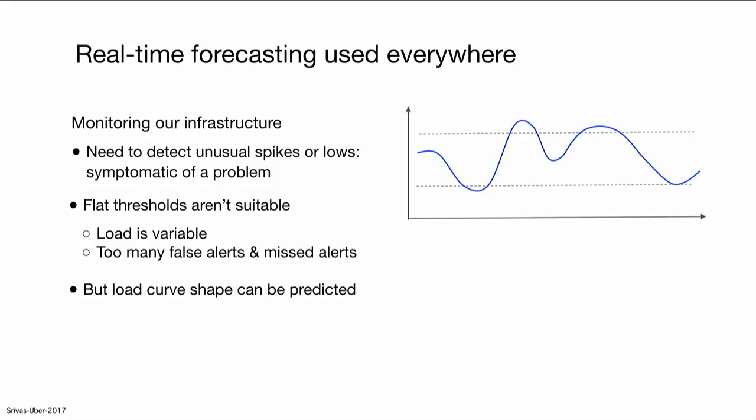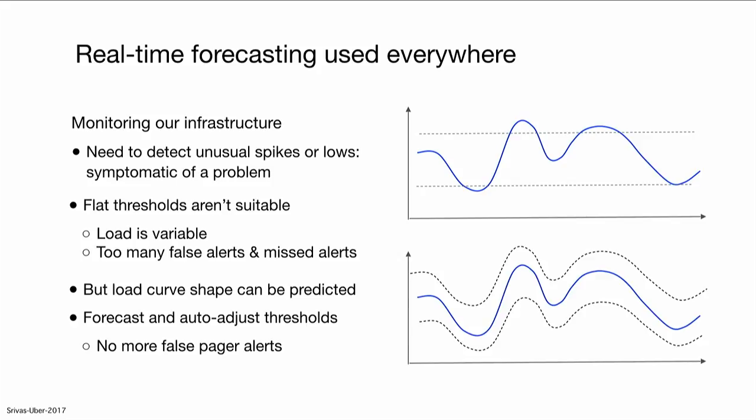And so we try to predict the load, and we can adjust the thresholds automatically. We use machine learning to figure out how to place the thresholds so that we don't get surprised, and we can sleep better at night.